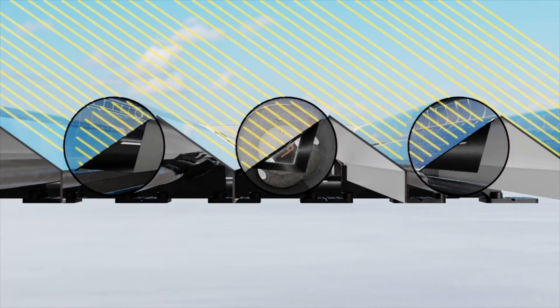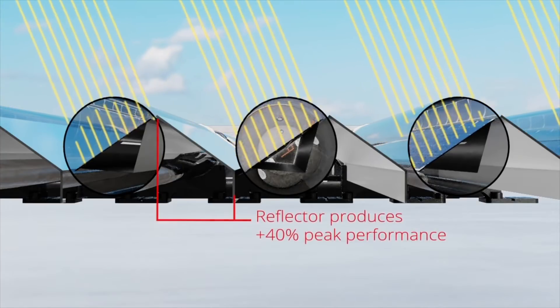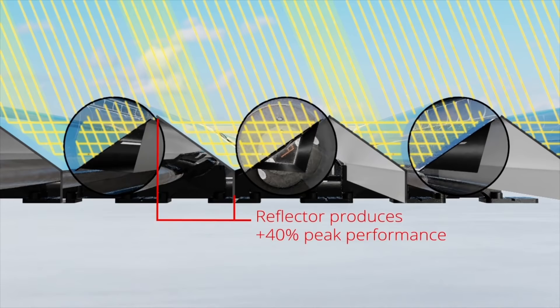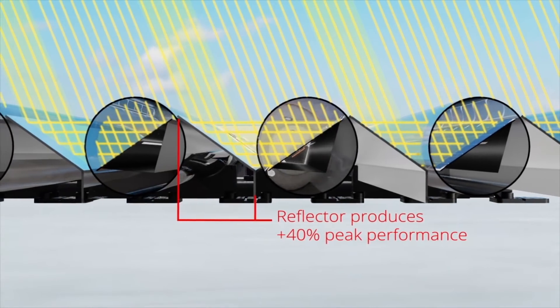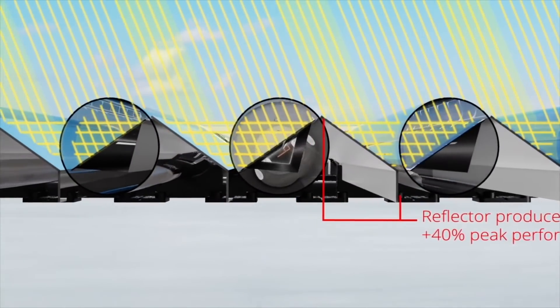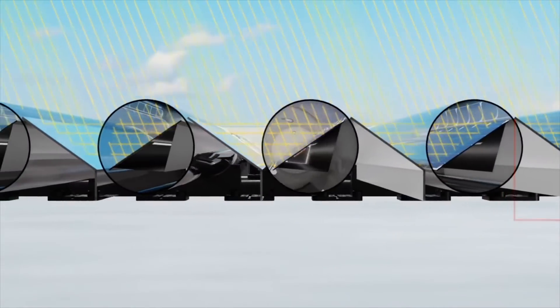To maximize summer outputs when the sun is higher, a reflector captures the solar energy that would otherwise have missed the tubes, increasing peak performance by as much as 40% and average annual yields by 15%.